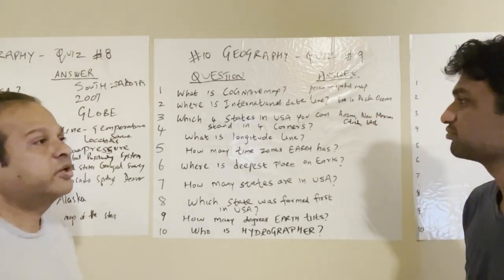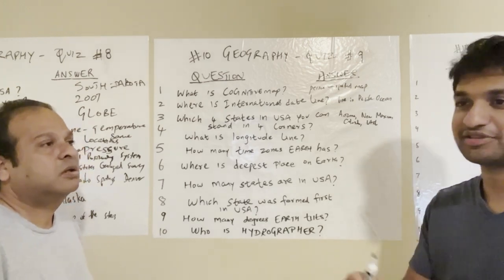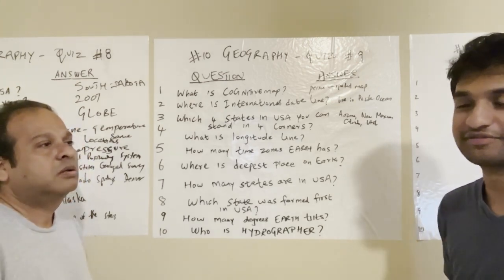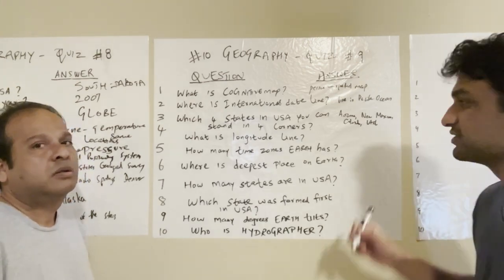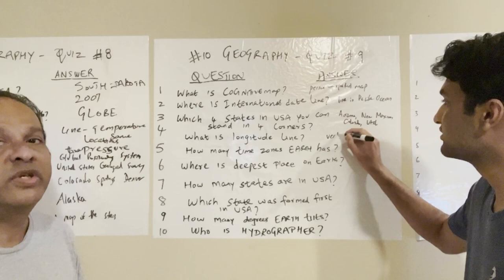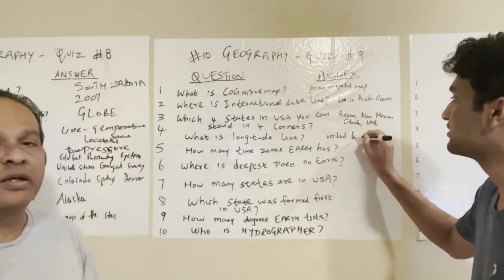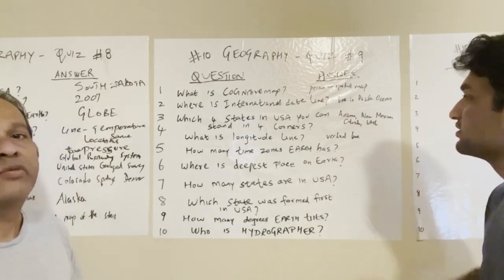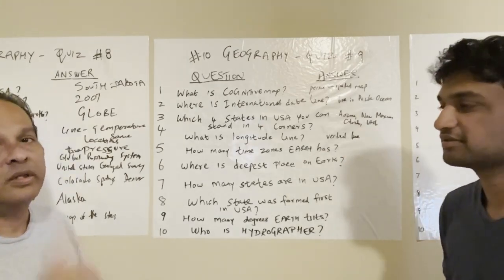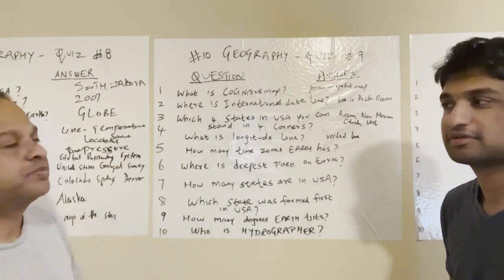What is a longitude line? It's a vertical line on the Earth's surface. If you see the globe, the longitude line is vertical, and the horizontal line is the latitude line.